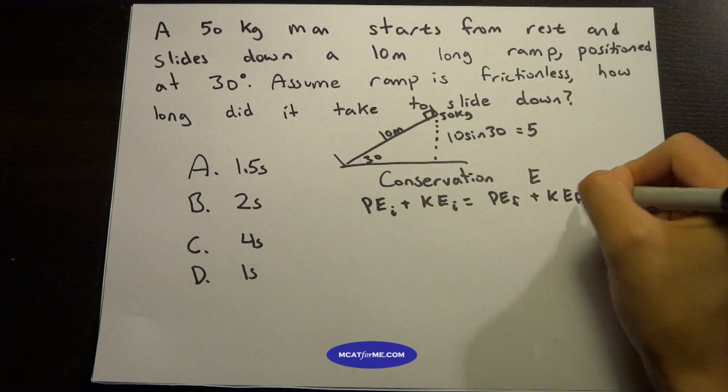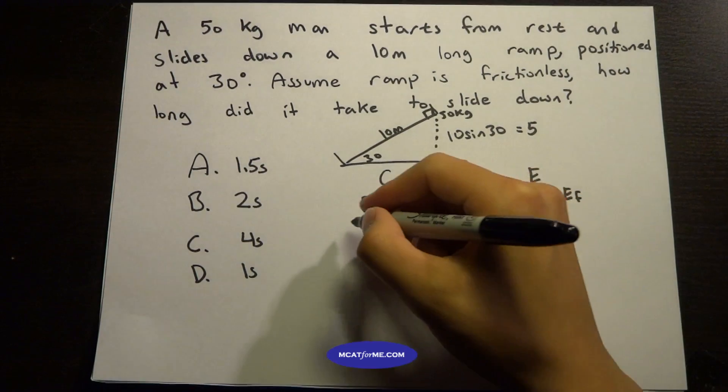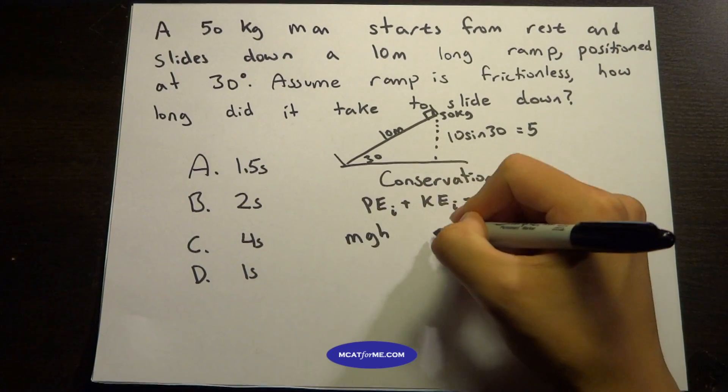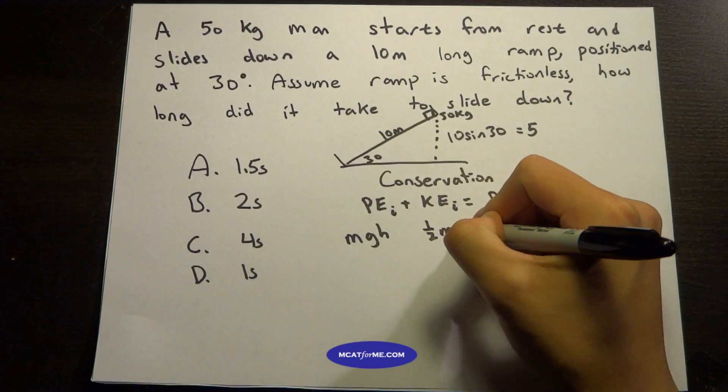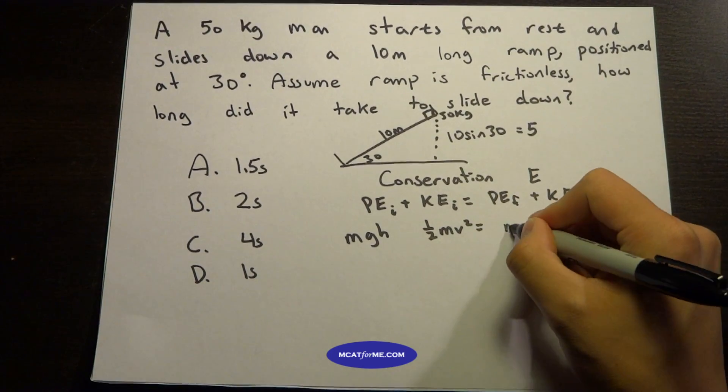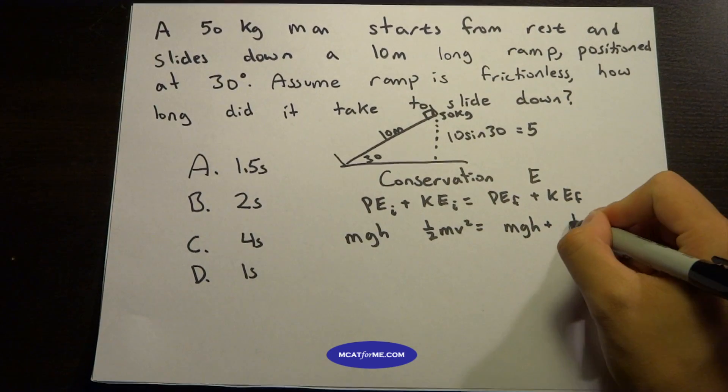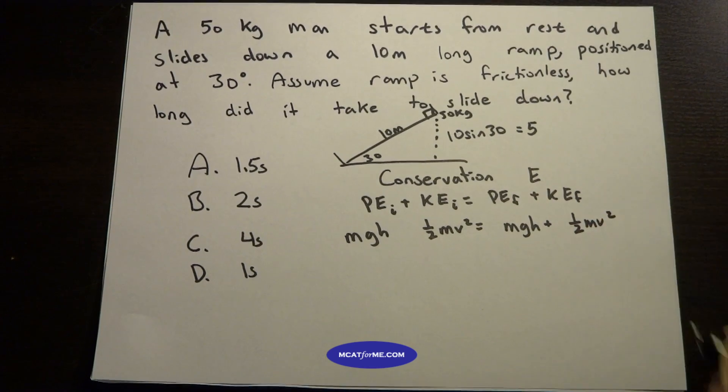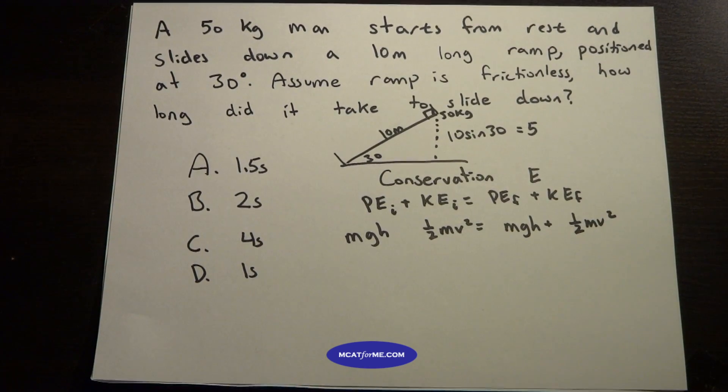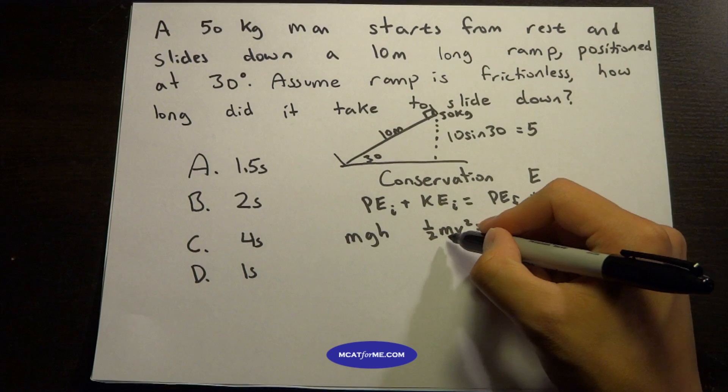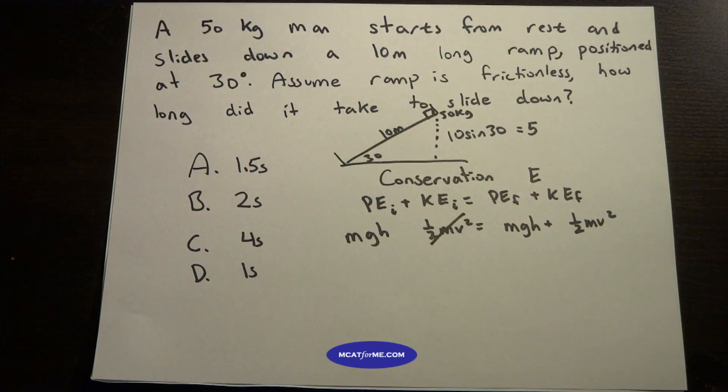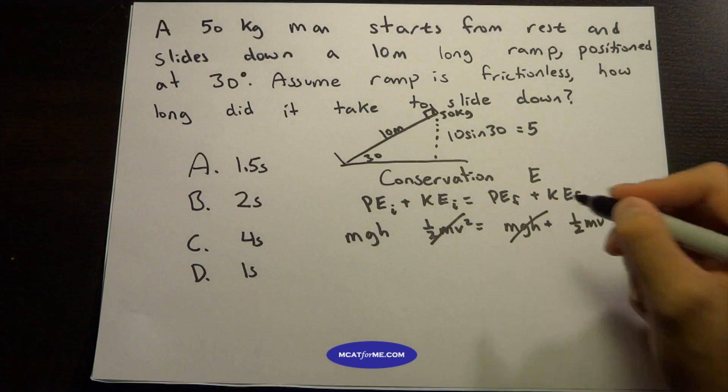We know that the equation is mgh for potential energy and one-half mv squared. But we know that initially he starts at rest, so his initial speed is going to be zero, so that's going to be cancelled out. And we know his final height is going to be zero because he reaches the ground.